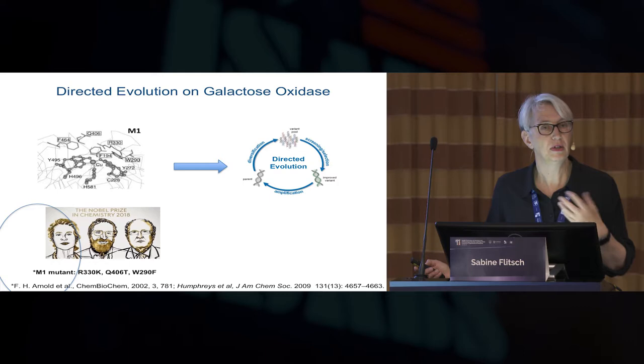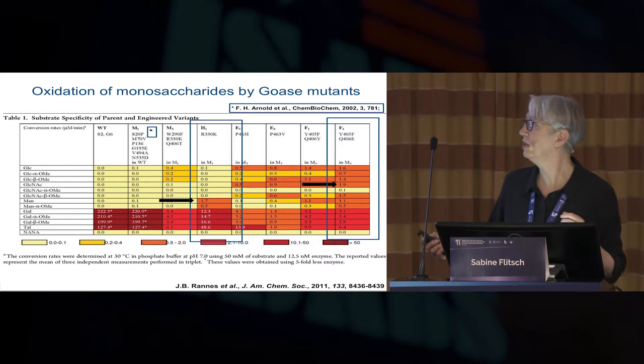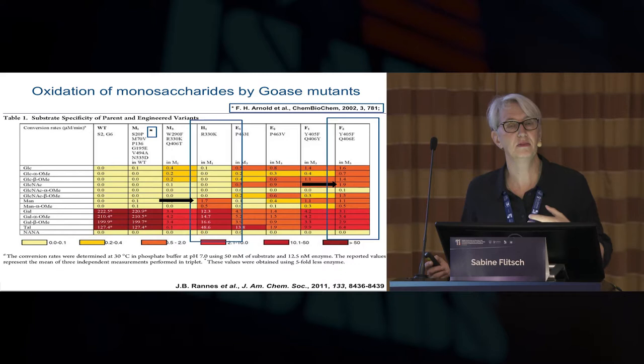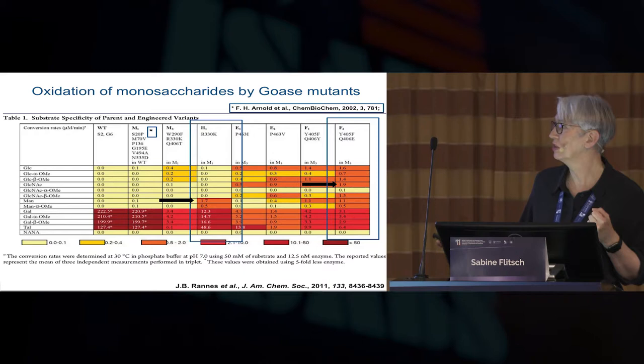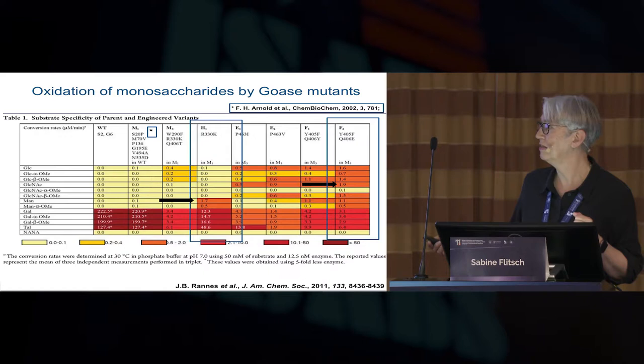We took her M1 mutant and tried to develop mutants that would actually oxidize other sugars. Here's a table of the mutants — on the left, wild type; that's Frances Arnold's M1 mutant; and then a whole set of mutants with multiple mutations we developed by selecting for enzymes with broader specificity. We tested them against different sugars. The wild type is highly selective for galactose and also takes talose, which is the C2 epimer, but has no activity against glucose, mannose, and so forth.